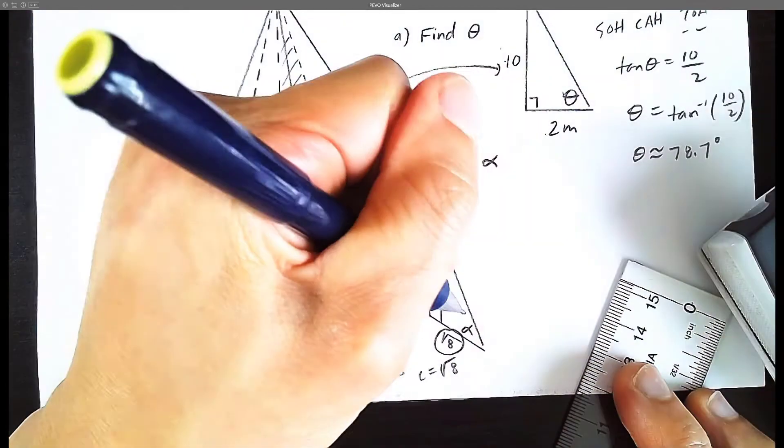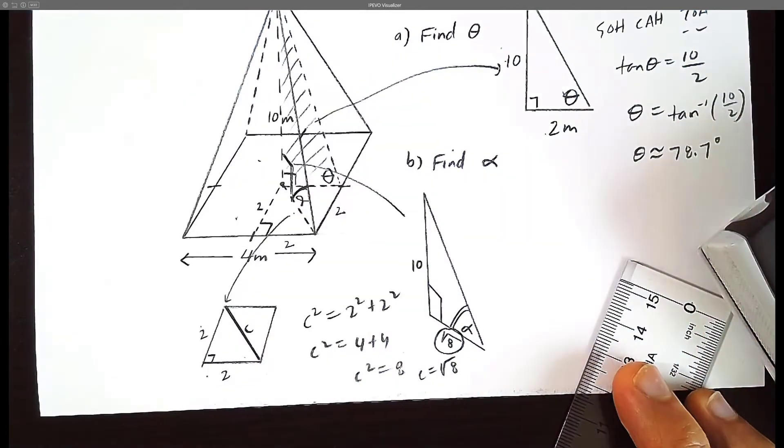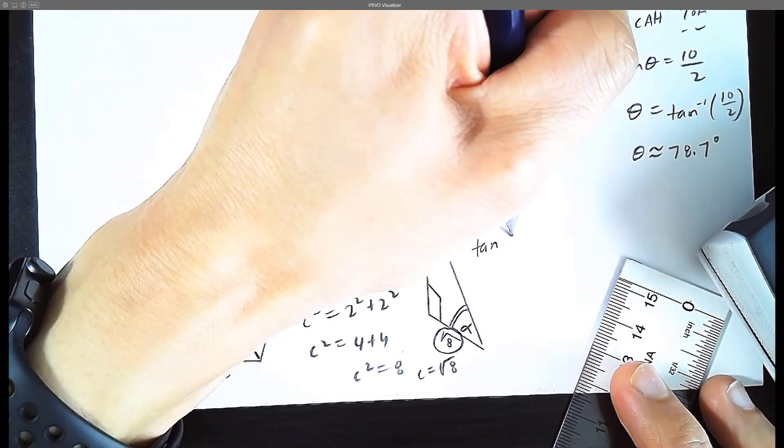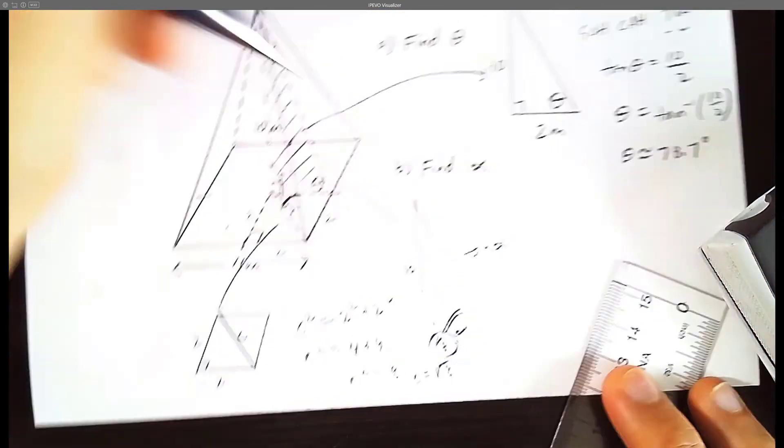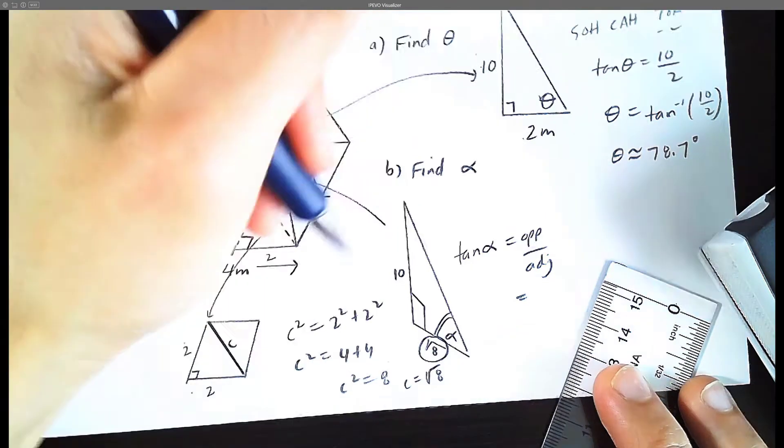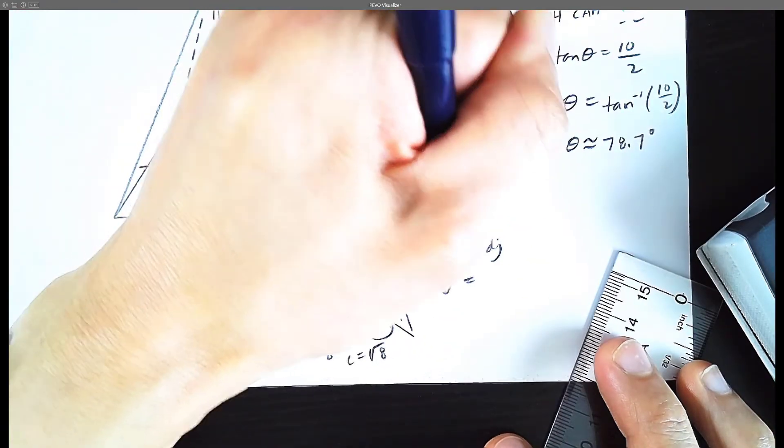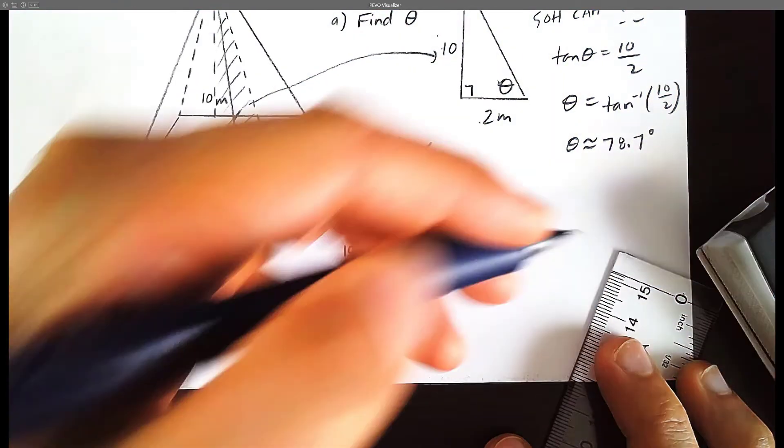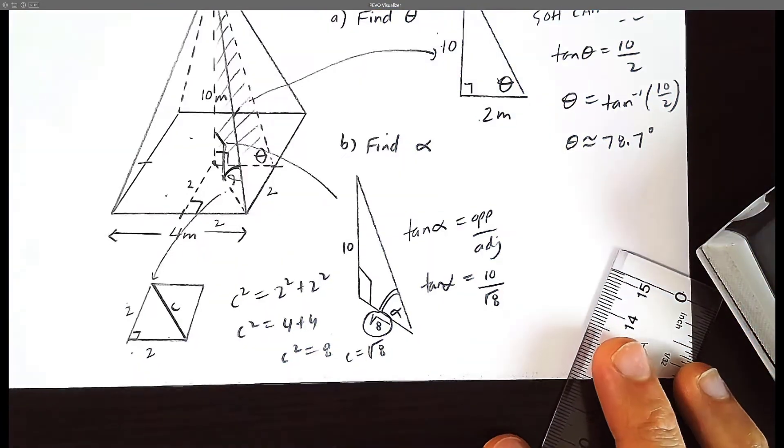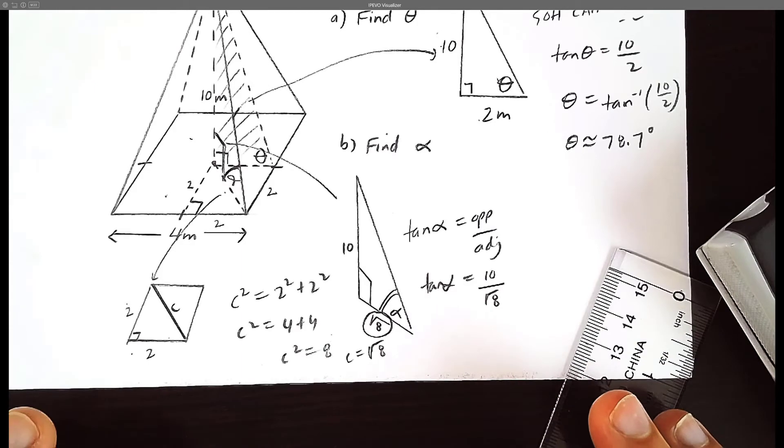We have the angle alpha which is what we're interested in. We're interested in an opposite adjacent which we have to use Pythagorean theorem to get. Opposite adjacent, SOH CAH TOA. It's going to be tan. Tan alpha equals opposite over adjacent. So tan alpha equals opposite which is 10 over some number which is root 8. Root 8 is simply a number. Irrational number.